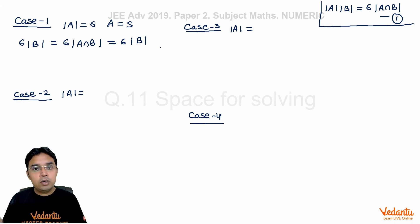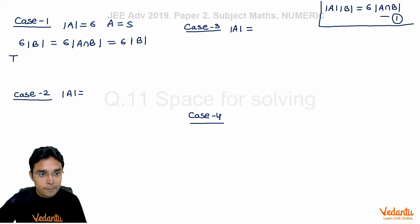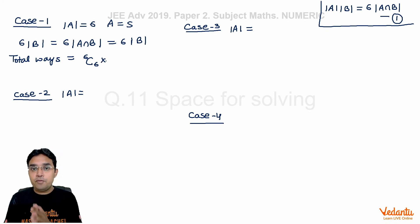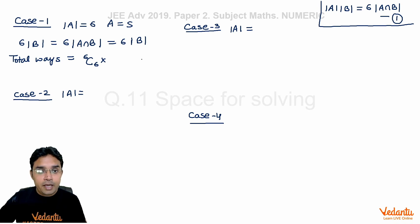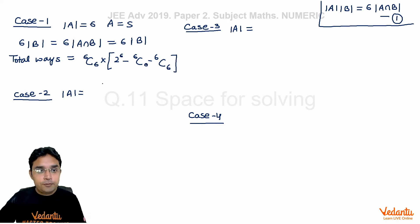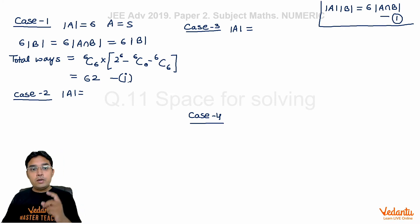Since A has all six elements, B can have any number of elements from one to five, keeping B strictly smaller than A. There is only 1 way to select A (which is all of S). For B, the total subsets of S are 2⁶ = 64, but we subtract the empty set (⁶C₀) and the full set (⁶C₆), giving 62 valid choices. So Case 1 contributes 62 ordered pairs.